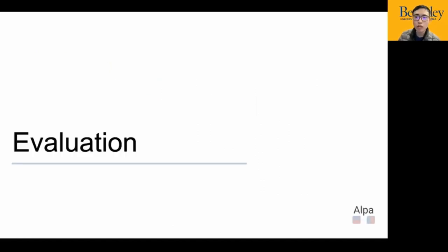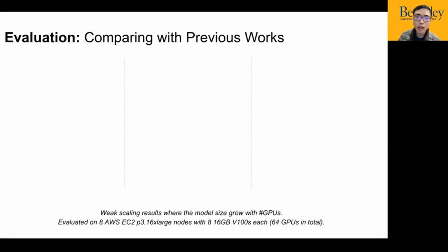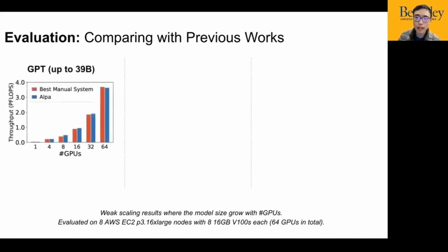Now, let's move on to the evaluation of ALPA. We compare ALPA with previous works on three widely used models. For GPT, the standard transformer model, we test for models up to 39 billion parameters. The transformer is an extensively studied model, and we can match the performance of the best existing manually designed framework, Megatron LM. Actually, we find almost identical parallelization strategies as the best manual system.